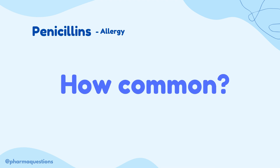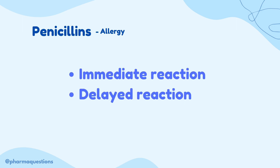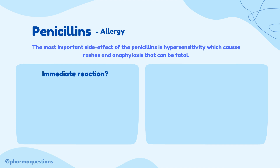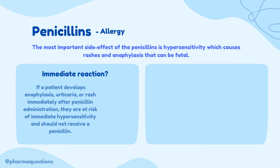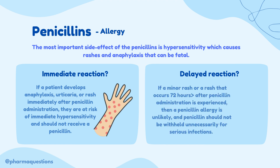Penicillin allergies are quite common — it's estimated that 10% of Americans are allergic to penicillin, however less than 1% of these people have a true allergy. If a patient develops anaphylaxis or a rash immediately after penicillin administration, they are at risk of immediate hypersensitivity and should not receive a penicillin. However, if a patient experiences a delayed reaction — such as a minor rash or a rash occurring 72 hours after administration — a penicillin allergy is unlikely and penicillin should not be withheld unnecessarily.